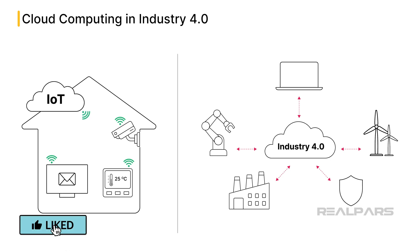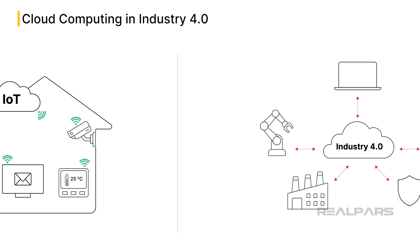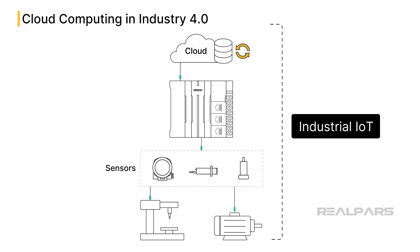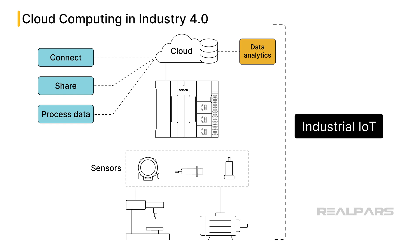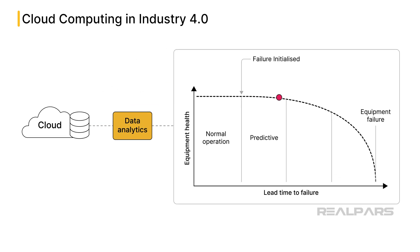Cloud computing has become an essential part of IoT and Industry 4.0, which relies heavily on data and connectivity. We've already mentioned how cloud computing has infiltrated the domestic IoT world, facilitating the use of smart devices like thermostats and surveillance cameras. Cloud computing is also used in the industrial IoT — it enables smart sensors and machines to connect, share, and process data in real-time, making it invaluable in manufacturing and automation. One key benefit is the ability to perform data analytics, allowing analysis of large datasets for insights into improving efficiency and predicting equipment failure and maintenance needs, thus reducing downtime.